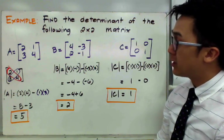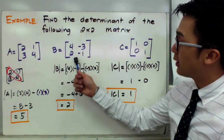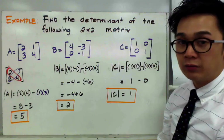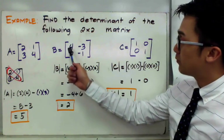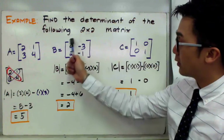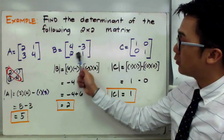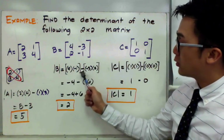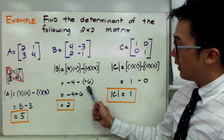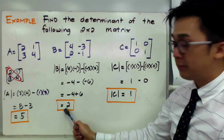Now, in finding the determinant of our second matrix, which contains 4, negative 3, 2, and negative 1, we'll follow the same rule as the first example. We find the product of the first diagonal, which is 4 times negative 1, and the product of the second diagonal, which is negative 3 times 2. Subtracting them gives us negative 4 minus negative 6. Therefore, the determinant of matrix B is equal to 2.